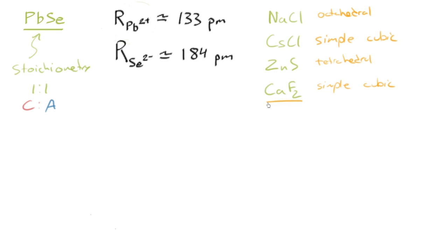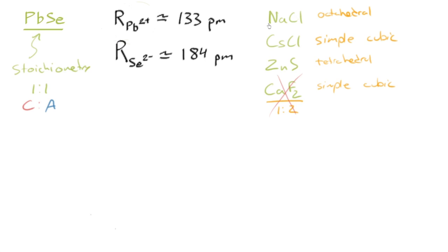But you can see that the stoichiometry is different, it's one to two, there's twice as many anions. So just looking at our one-to-one ratio for lead selenide, we know we can rule out right off the bat that the stoichiometry is not correct for calcium fluorite. So now we're left with deciding if it's going to be octahedral, cesium chloride, or zinc blend. Or rationalizing, perhaps, if you already know which one it is, why that's the case.